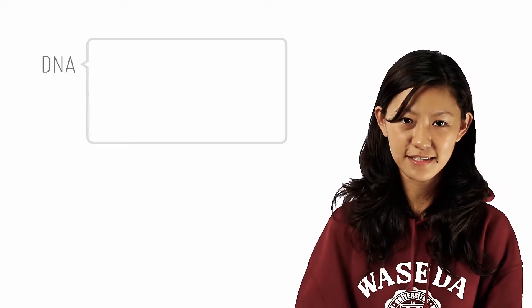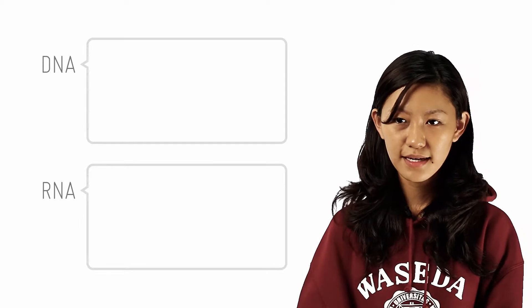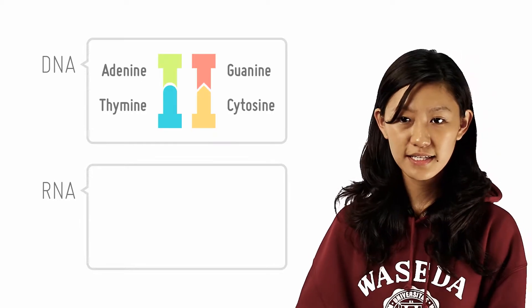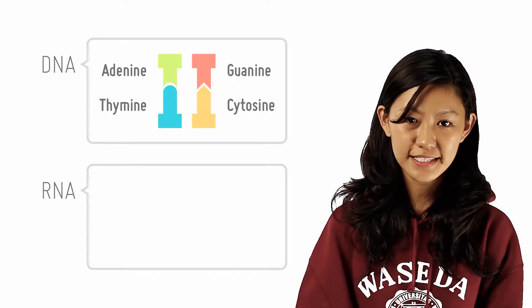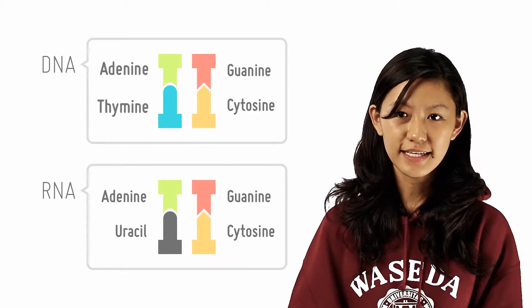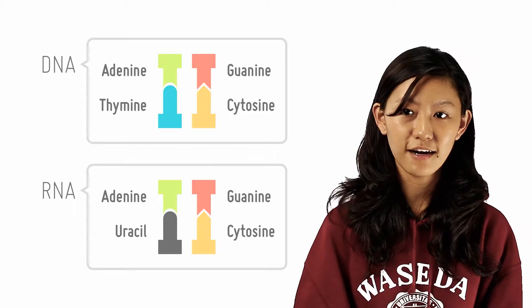One thing to take note here is the differences in the nitrogenous bases of deoxyribonucleotide and that of ribonucleotides. The bases found in DNA are adenine, guanine, cytosine and thymine, while the bases found in RNA are adenine, guanine, cytosine and uracil. Note that thymine is only found in DNA, while uracil is only found in RNA.